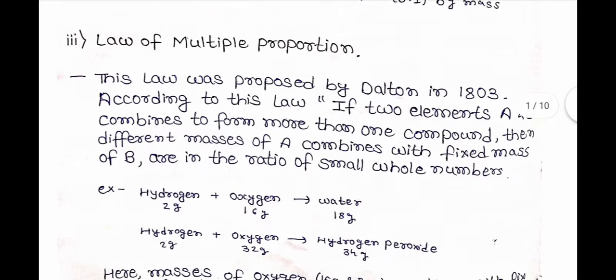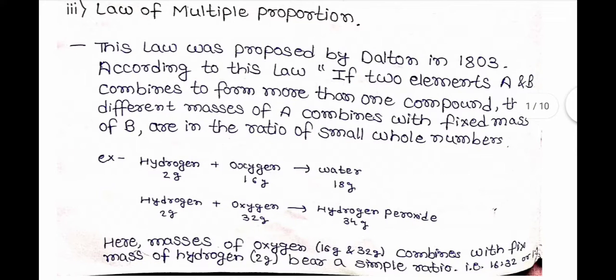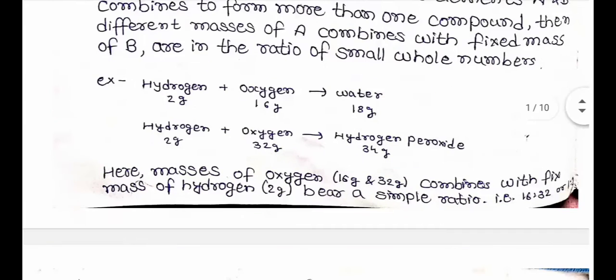According to this law, if two elements A and B combine to form more than one compound, then different masses of A that combine with a fixed mass of B are in the ratio of small whole numbers. Example: hydrogen and oxygen give water (18g: 2g hydrogen + 16g oxygen) and hydrogen peroxide (2g hydrogen + 32g oxygen). Here, masses of oxygen — 16g and 32g — combine with fixed mass of hydrogen (2g), bearing a simple whole number ratio of 16:32 or 1:2.